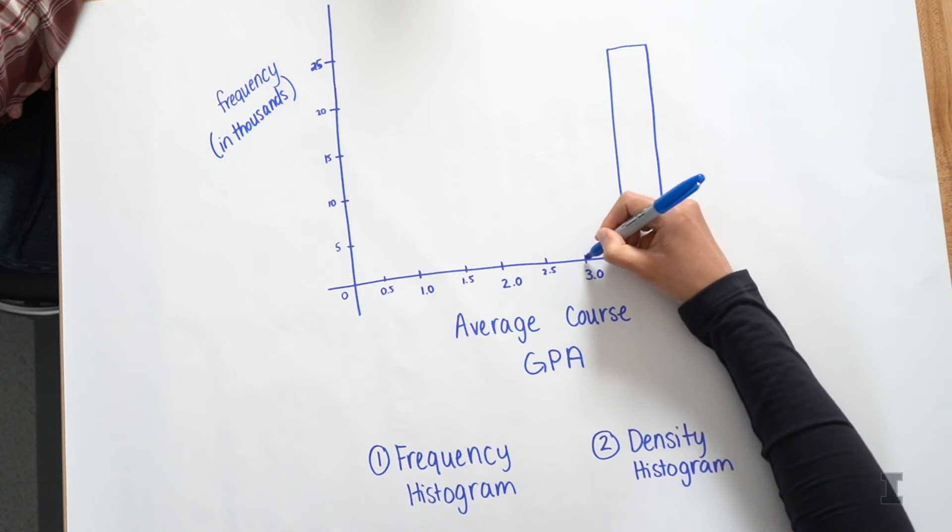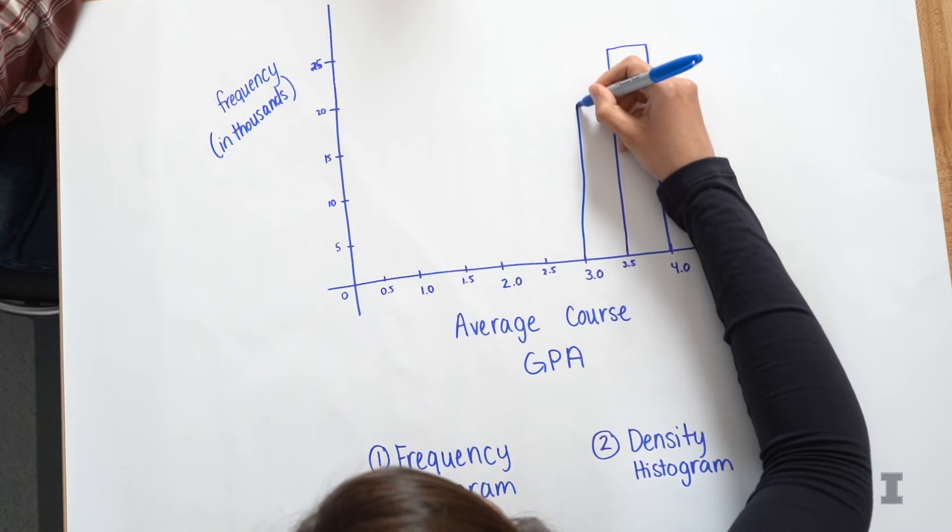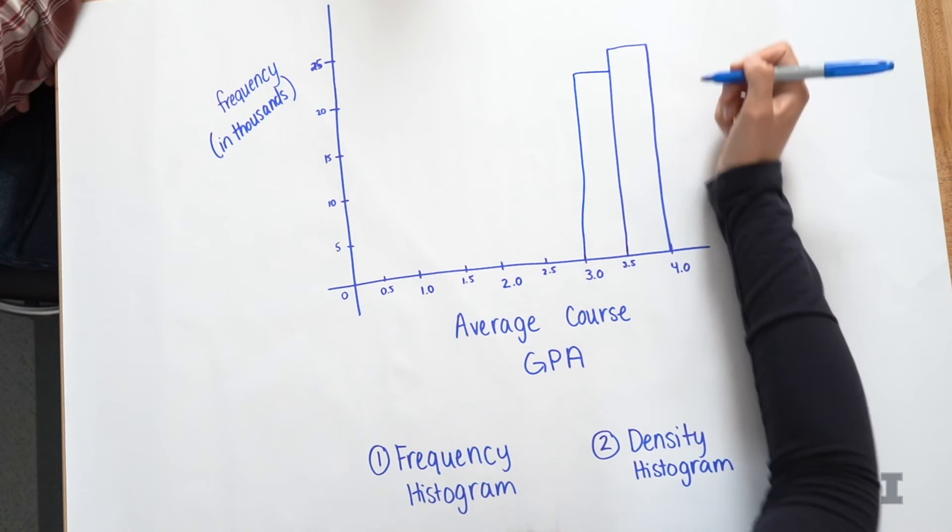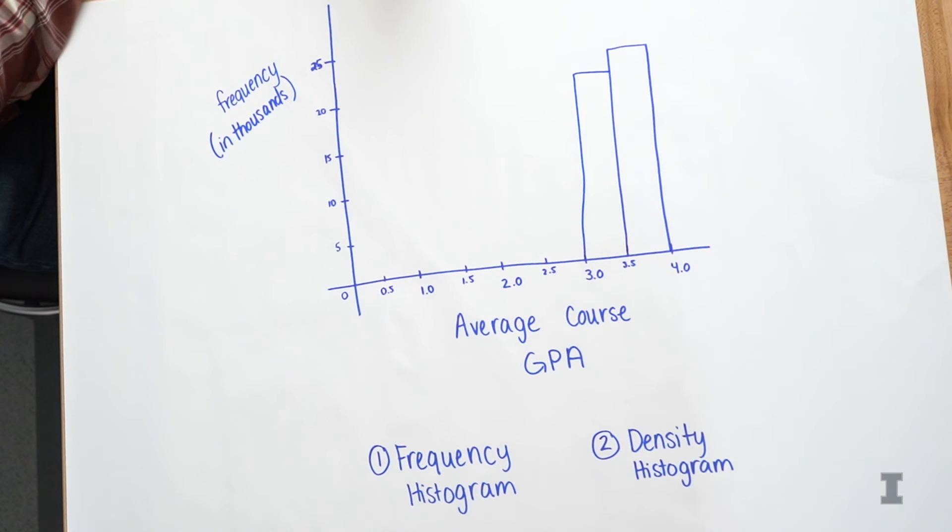So that's actually pretty close. So 3.0 to 3.5, you said there were 21,000. What was the number again? 21,752. 21,752.